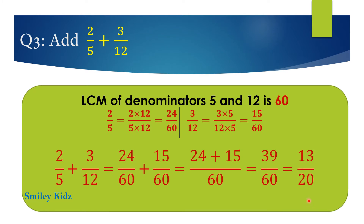The right answer is 13 by 20. To add unlike fractions, first find the LCM for the denominators. LCM of denominators 5 and 12 is 60. 2 by 5 equals 24 by 60, and 3 by 12 equals 15 by 60. Now adding: 24 by 60 plus 15 by 60 equals 39 by 60.